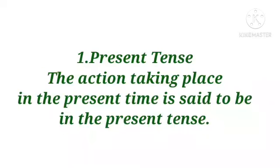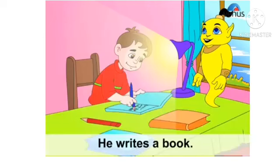The first one is present tense. The action taking place in the present time is said to be in the present tense. For example: he writes a book. In this sentence, the action 'writes' takes place in the present time.